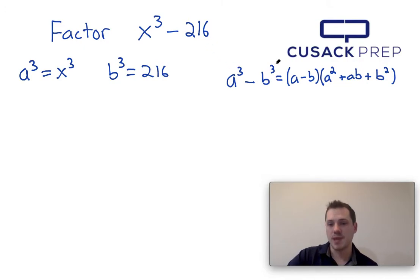Furthermore I can see that b cubed and 216 are in the same position. So I set these equal to each other and the reason I do that is if I take the cubic root of both sides I can determine that a is equal to x and that b is equal to 6. That's just me taking the cubic root of both sides of those equations.